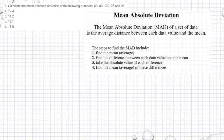So we have 60 plus 80 plus 100 plus 75 plus 95 divided by 5. That's 1, 2, 3, 4, 5. What I got is 410 divided by 5.